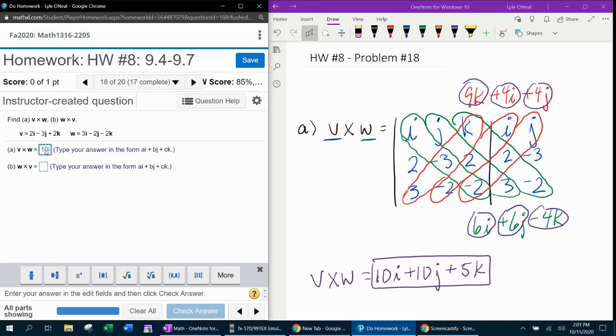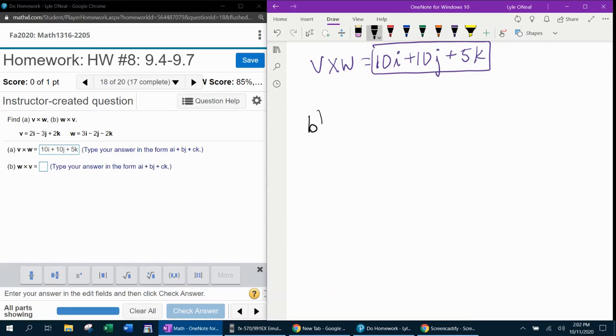All right. So to put this into MyLabMath, we're going to say 10I plus 10J plus 5K.